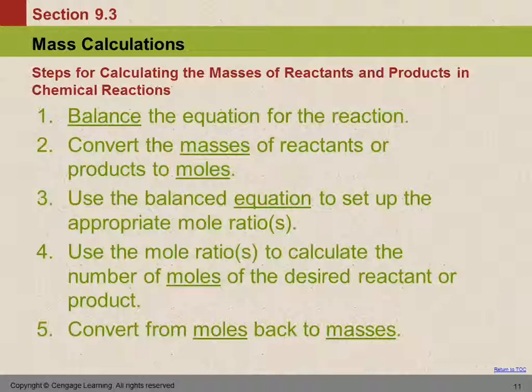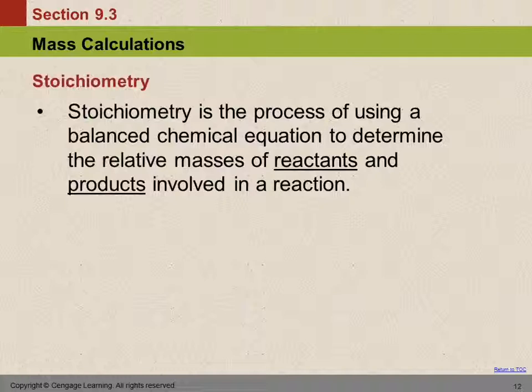Here are the steps for calculating masses of reactants and products. First, make sure your equation is balanced—some homework problems will require you to balance the equation. Then convert the given masses to moles using molar mass, as we learned in chapter 8. Next, use the balanced equation to set up the appropriate mole ratios. Use those mole ratios to calculate the moles of the desired reactant or product, and then convert from moles back to masses.